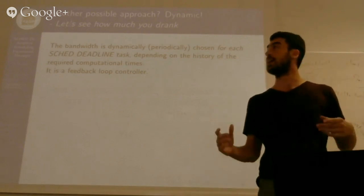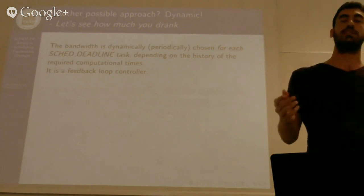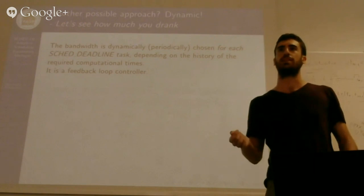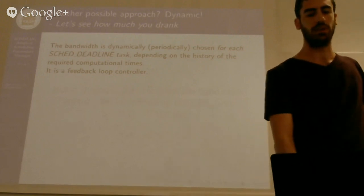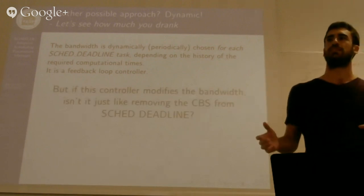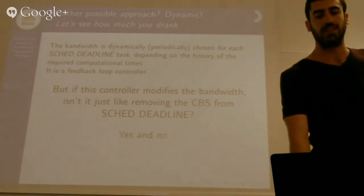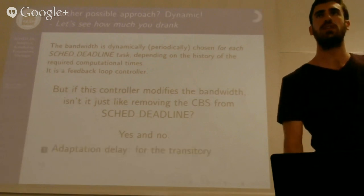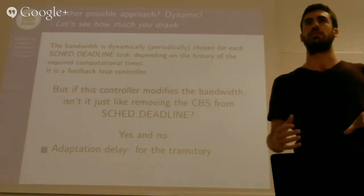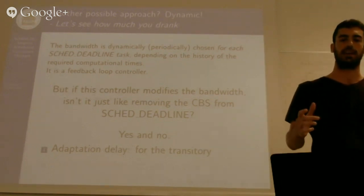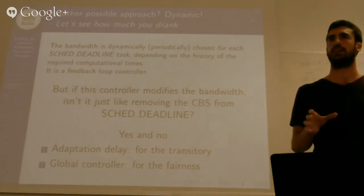So at this point, the possible solution can be to dynamically manage these parameters, this bandwidth. And it can be driven by the computational times required during the past, during the history of the computational times. So it just becomes a feedback loop, a feedback loop of controller. But if I adjust the parameters in a so dynamic way, isn't it just like removing the CBS from SCHED_DEADLINE? Well, yes and no. Because first of all, you need time to read parameters and adjust the bandwidth based on this stuff. And so in case of a transitory, the transitory status is attenuated by this delay. And more of that, in the tools I provide, I have a global controller, which gives some fairness between the several tasks.